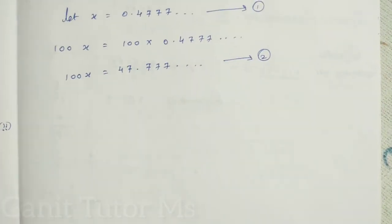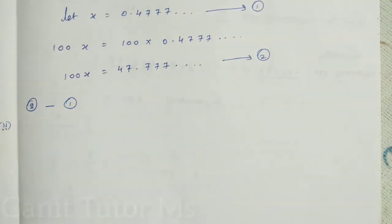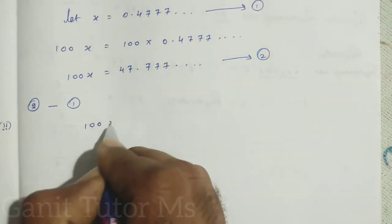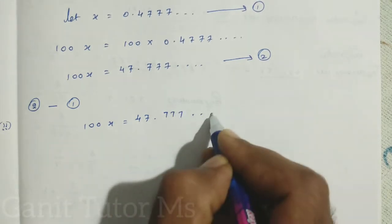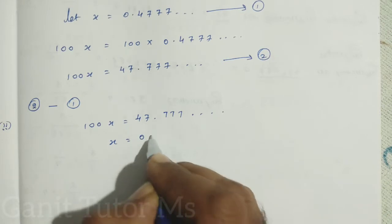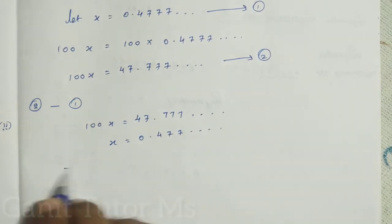Now you can subtract equation 1 from equation 2. So equation 2 minus equation number 1. So what is the equation number 2 first? First, 100X is equal to 47.777, etc. Equation number 1, what it is? X is equal to 0.477, etc. Clear?